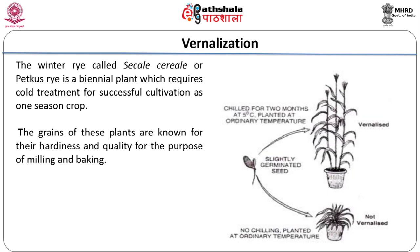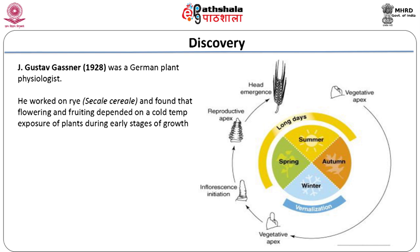Among many plants, Secale cereale was the first to be used for experimentation. Other examples include Hyoscyamus niger, Triticum aestivum, Lunaria biennis, Arabidopsis thaliana, Lolium perenne, Beta vulgaris, Brassica oleracea, and others.